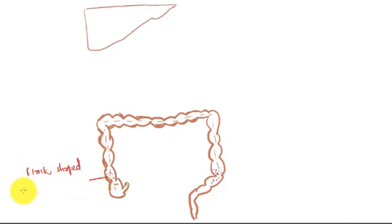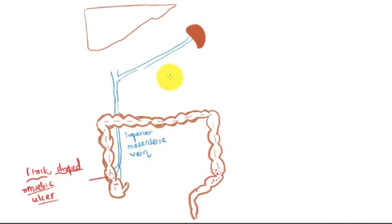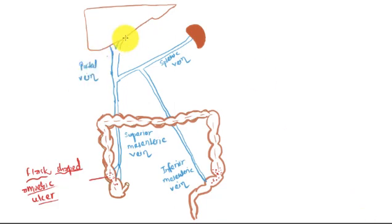Here we can see the flask-shaped amoebic ulcer in the right and left side of the colon. This is superior mesenteric vein which drains the right side of the colon. This is splenic vein and inferior mesenteric vein which drains the left side of the colon. The splenic vein and superior mesenteric vein combine together forming portal vein. The portal vein in turn divides into right and left branches into the hilum of the liver.